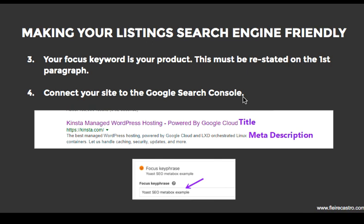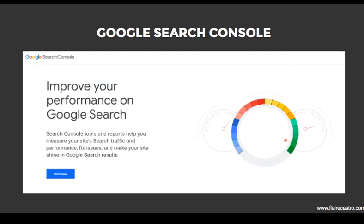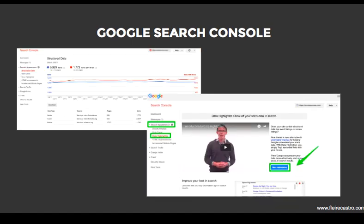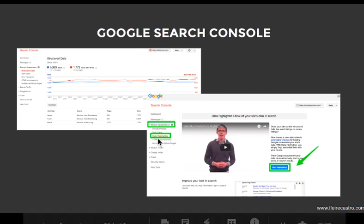Your focus keyword is your product name — that is your focus keyword so that when people search for that product, they can find it online. It must be restated in the first paragraph. Once you have your Yoast, connect it to Google Search Console — these are the things you will set up after this demo. Google Search Console, Google Analytics, and Yoast — we're going to put these together. Google Search Console helps you manage the performance of your website, how it looks on Google, and what things you should do. If there's such a thing as search engine optimization, this is the way for you to know if you're actually ranking on Google. Google Search Console will show you the problems on your site — the traffic, the top keywords people use to go to your site, the number of views, impressions, and users.